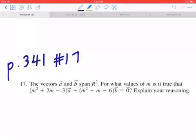Hi everyone, let's take a look at number 17 on page 341. The vectors a and b span a two-dimensional space. For what values of m is it true that m squared plus 2m minus 3 times vector a plus m squared plus m minus 6 times vector b equals vector 0? Explain your reasoning.